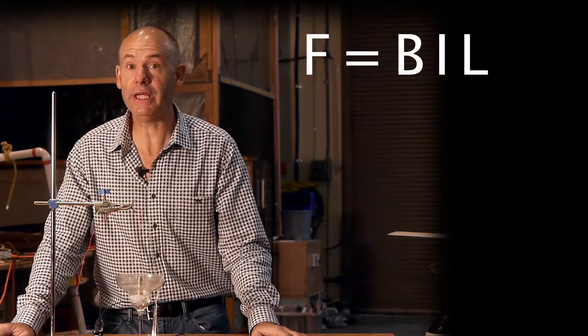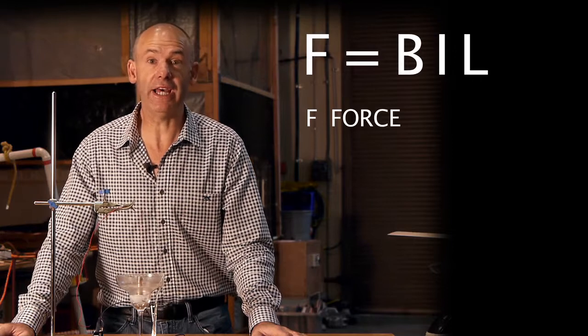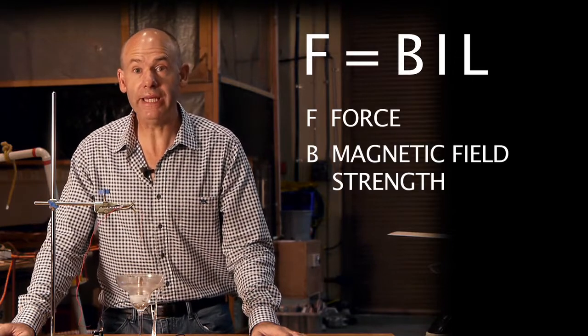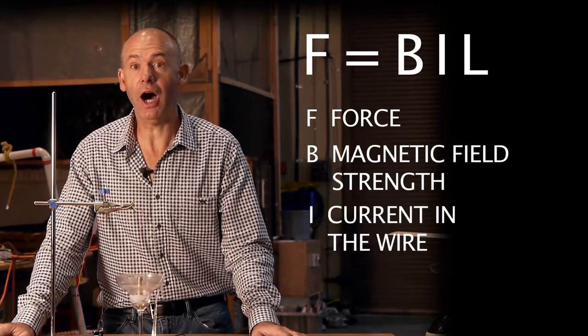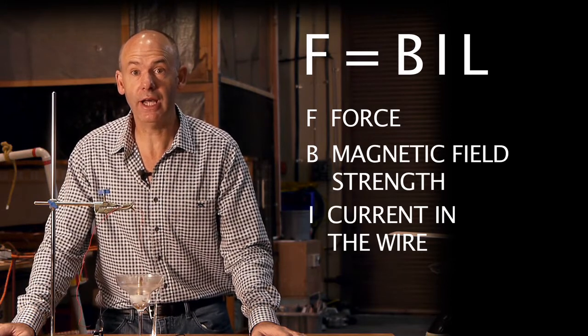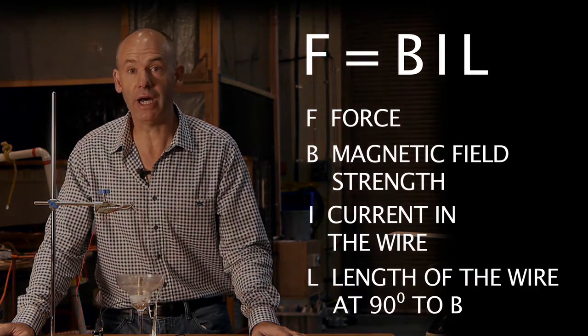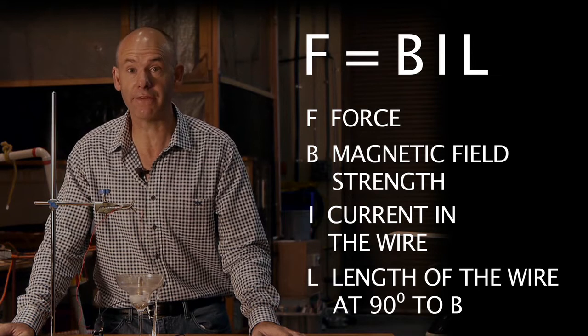The equation which describes what's going on here is the motor effect equation, F equals BIL, where F is the force on the wire, B is the magnetic field strength, I is the current in the wire and L is the length of the wire that is perpendicular to the magnetic field.